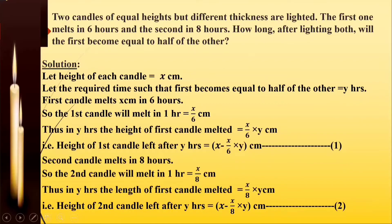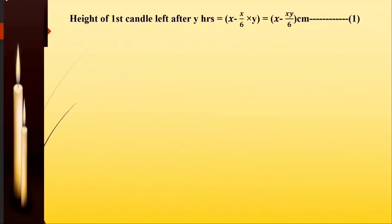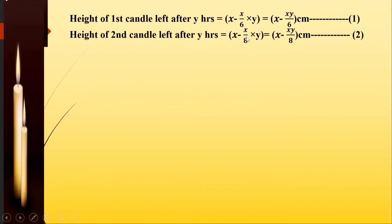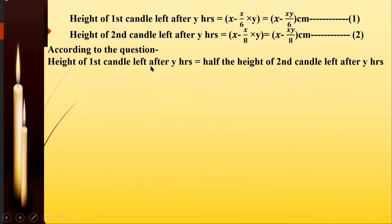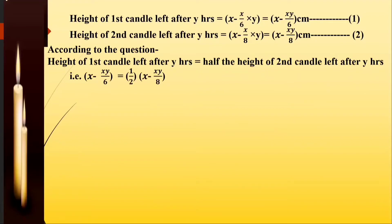This gives us our two expressions — the first candle's remaining height is x minus xy upon 6, and the second candle's remaining height is x minus xy upon 8. According to the question, the height of the first candle left after y hours is equal to half the height of the second candle left after y hours. So we write: x minus xy upon 6 equals half of x minus xy upon 8.